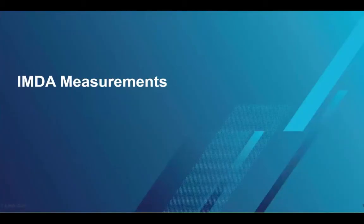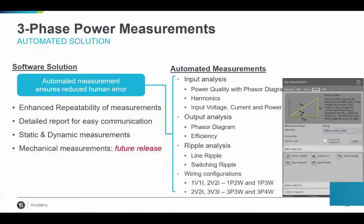IMDA is the name of the software on our scope that makes automated three-phase power measurements. The solution has input analysis including power quality and phase diagram measurements, total harmonic distortion measurements, output efficiency analysis, ripple analysis, and different wiring configurations from 1V1I up to 3V3I. You specify your connections in the software configuration, choose what measurements you want to make, and go ahead and make your measurements.